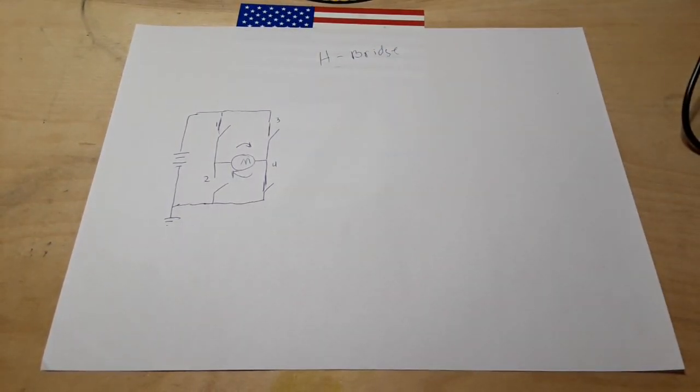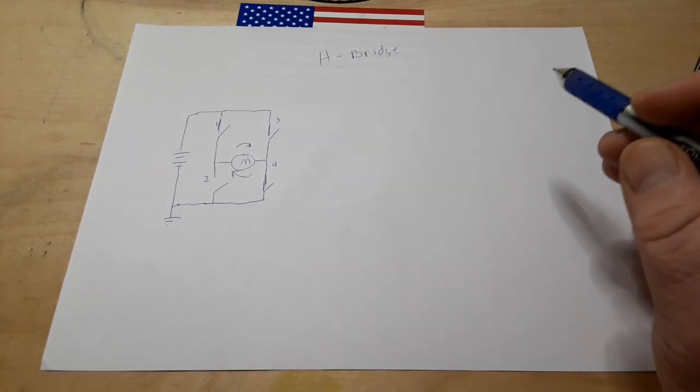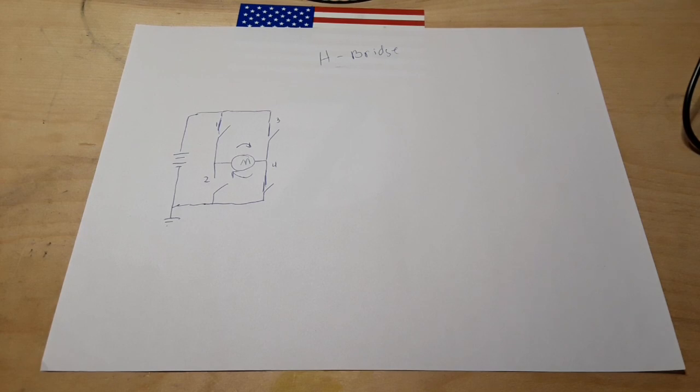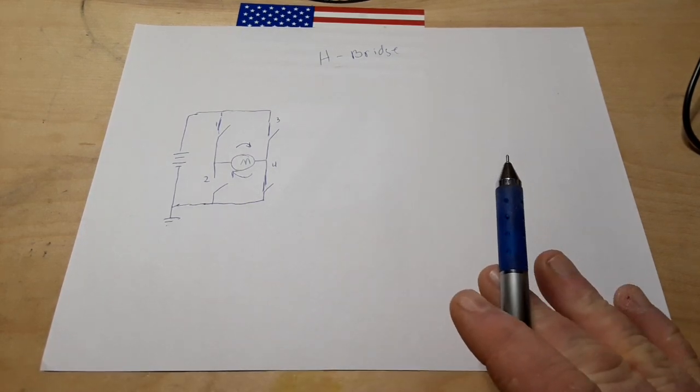But if we turn on switches two and three, well then the motor is going to work like this. Pretty simple concept, right? All we're doing is switching the direction of current flow through the motor and that's known as an H-bridge because that looks like an H.